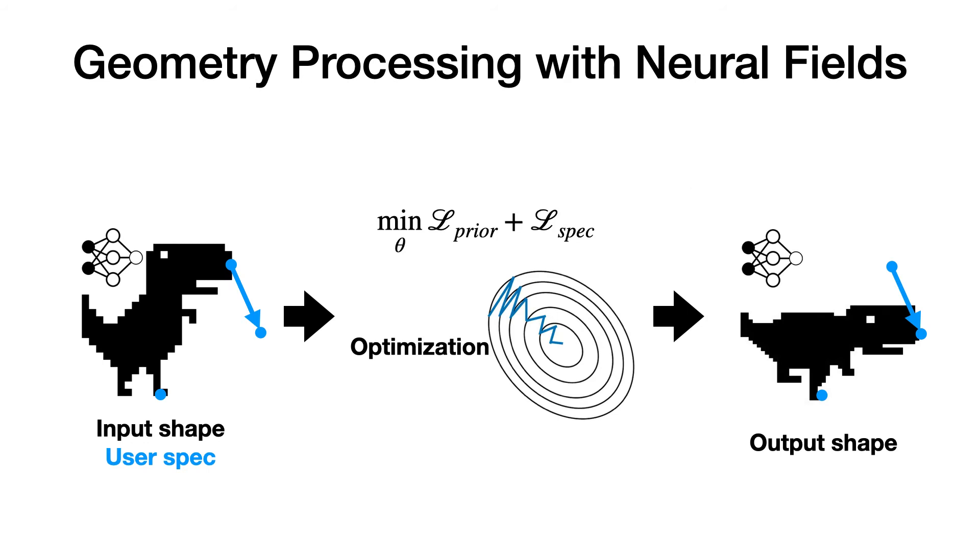We hypothesize that geometric processing with neural fields can be done in the following way. For each task, we will design a loss function. This loss function can capture necessary priors and make sure that the user specifications are satisfied. Minimizing such loss will produce a neural field representing the output. Our paper will provide a proof of concept that this is indeed possible. For the rest of this video, we will take deformation as an example to show how this can be done.